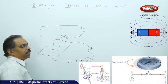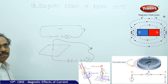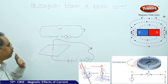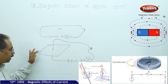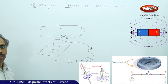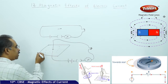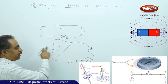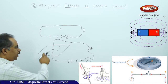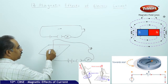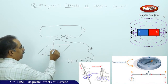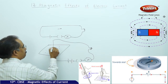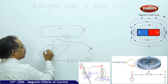When I switch on the circuit and gently tap the cardboard, all the iron filings get arranged themselves in circular patterns around the wire.